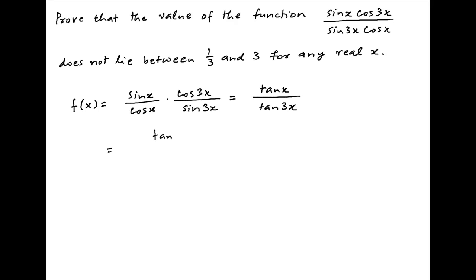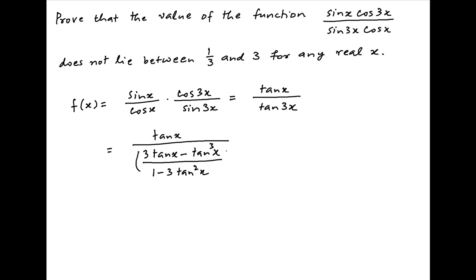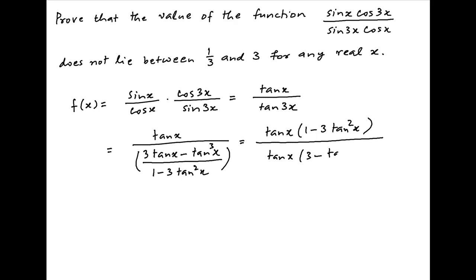Now tan 3x can be replaced with (3 tan x minus tan³x) divided by (1 minus 3 tan²x). Therefore the value of f(x) is equal to tan x times (1 minus 3 tan²x) divided by tan x times (3 minus tan²x).